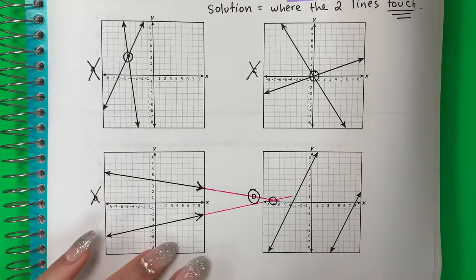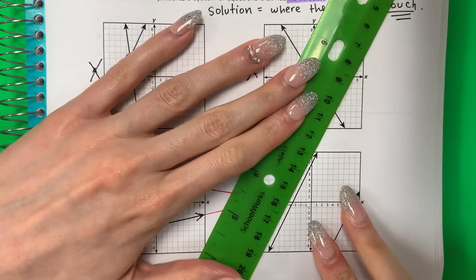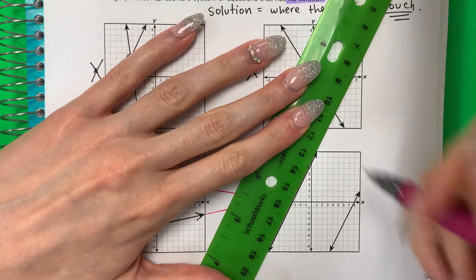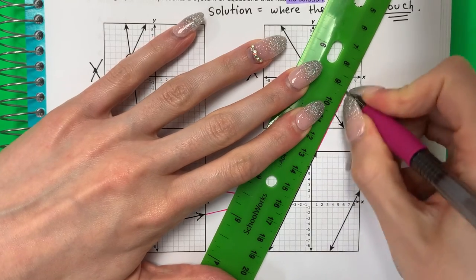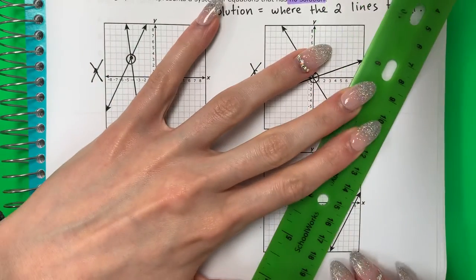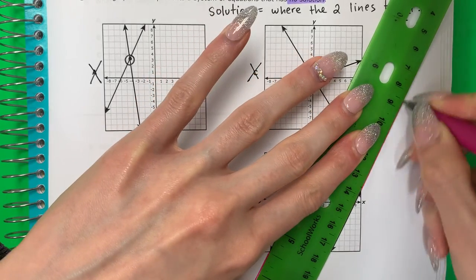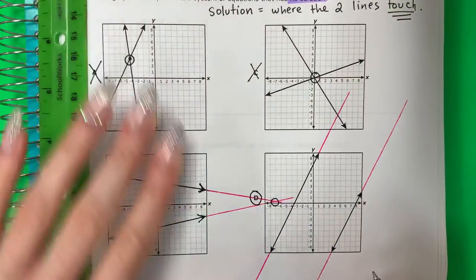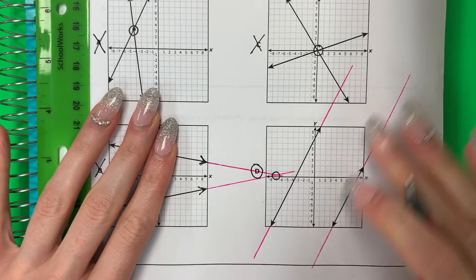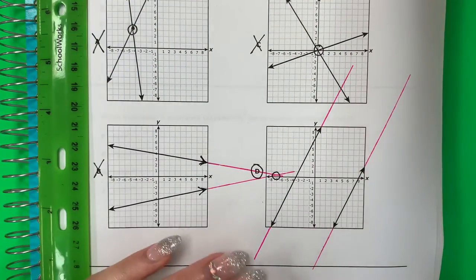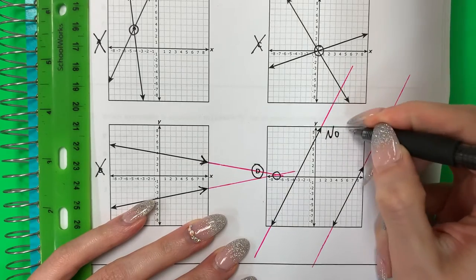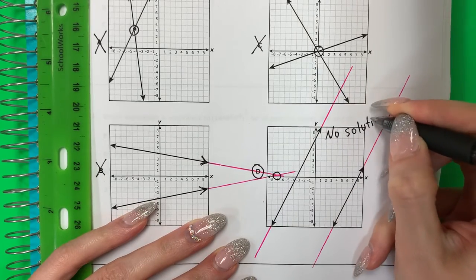If you do a line, if you go ahead and continue them, they will still never touch. Todavía. Nunca. Va a tocar. Okay, so because it's parallel. So this is no solution. No tiene solución.